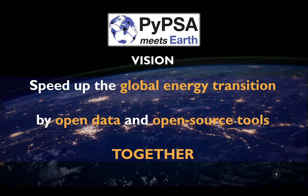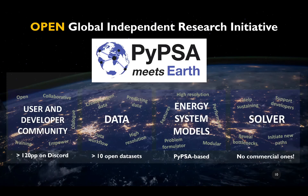That's why PyPSA-Earth Africa comes into play. We want to speed up the global energy transition by using open data, open source tools, and especially working together to cover all the points mentioned. When we go into more detail, we act on four main pillars. The strongest pillar must be community, because we want to engage everyone. Recently we saw about 122 people on Discord, and this number has already increased as more people joined in recent hours.